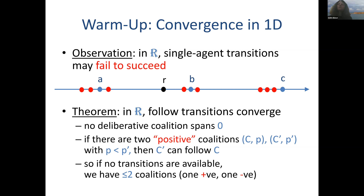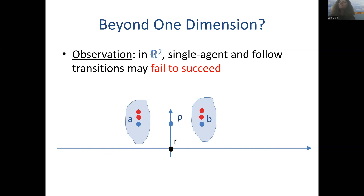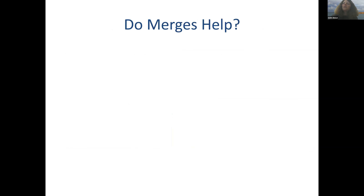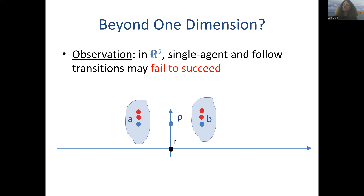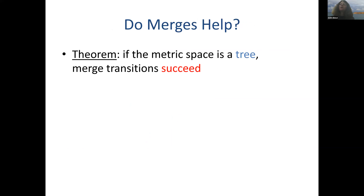So in R1, follow transitions already guarantee convergence — good news. Unfortunately this doesn't generalize beyond one dimension. Already in two dimensions, both single agent and follow transitions may fail to succeed. In this example, we have two agents supporting proposal A and two agents supporting proposal B, and in fact all of them would be happy with proposal P, but follow transitions don't allow them to join forces behind P because follow transitions mean either A or B would have to be adopted as the new proposal. Merge transitions, which allow two coalitions to merge behind a new proposal, would actually be helpful here.